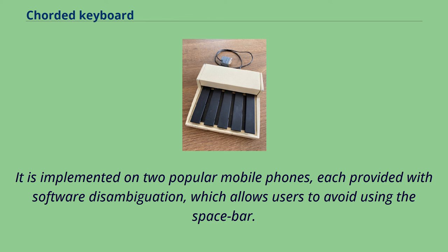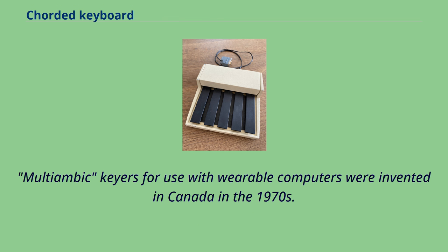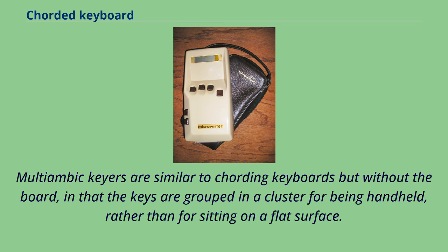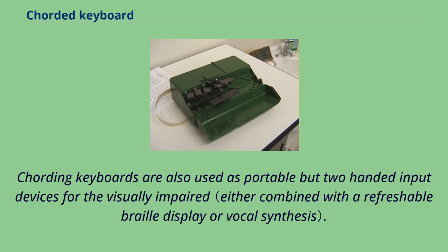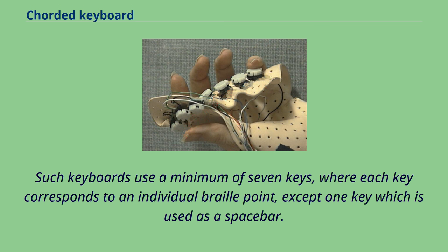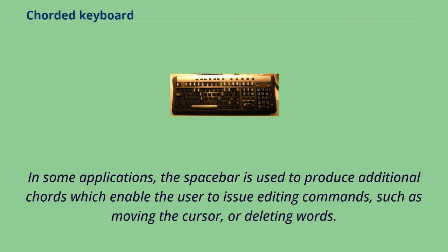Multiambic keyers for use with wearable computers were invented in Canada in the 1970s. Multiambic keyers are similar to cording keyboards but without the board, in that the keys are grouped in a cluster for being handheld rather than for sitting on a flat surface. Cording keyboards are also used as portable two-handed input devices for the visually impaired, using a minimum of seven keys where each key corresponds to an individual Braille point, except one key used as a spacebar. In some applications, the spacebar is used to produce additional chords enabling editing commands such as moving the cursor or deleting words.